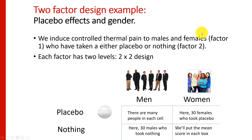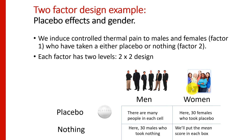We're going to present a hypothetical experiment with a two-factor design where each factor has two levels. In our fake experiment, one factor is placebo — you either got a placebo pill or you got nothing — and the other factor is gender: all adult men and all adult women. We're going to induce controlled thermal pain to both males and females who have either been given a placebo, which they're told is actually an analgesic, or they've been given nothing. They hold a sensor that gets warmer and warmer, up to about the temperature of a hot cup of coffee, and then they rate how painful they feel it is.